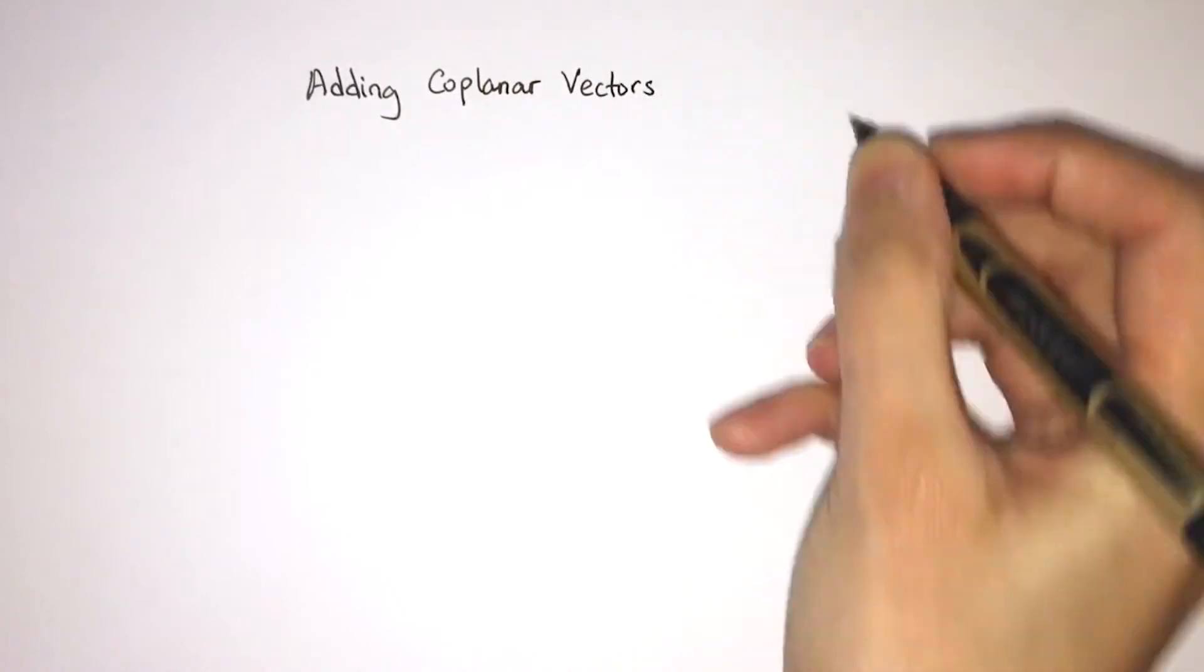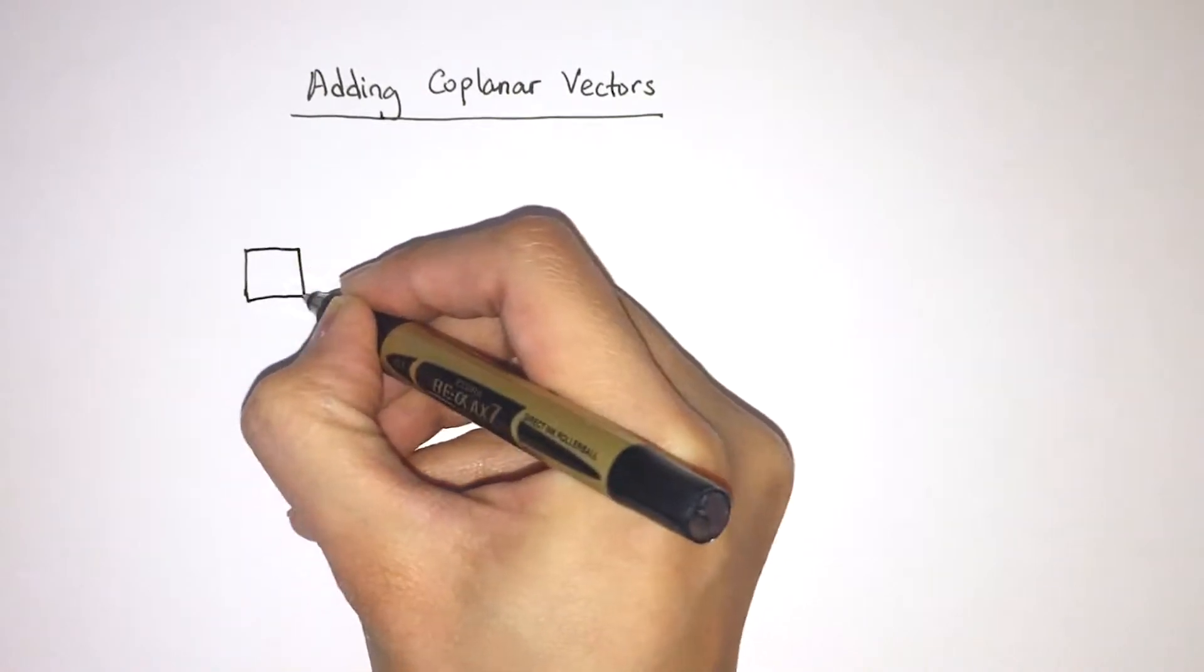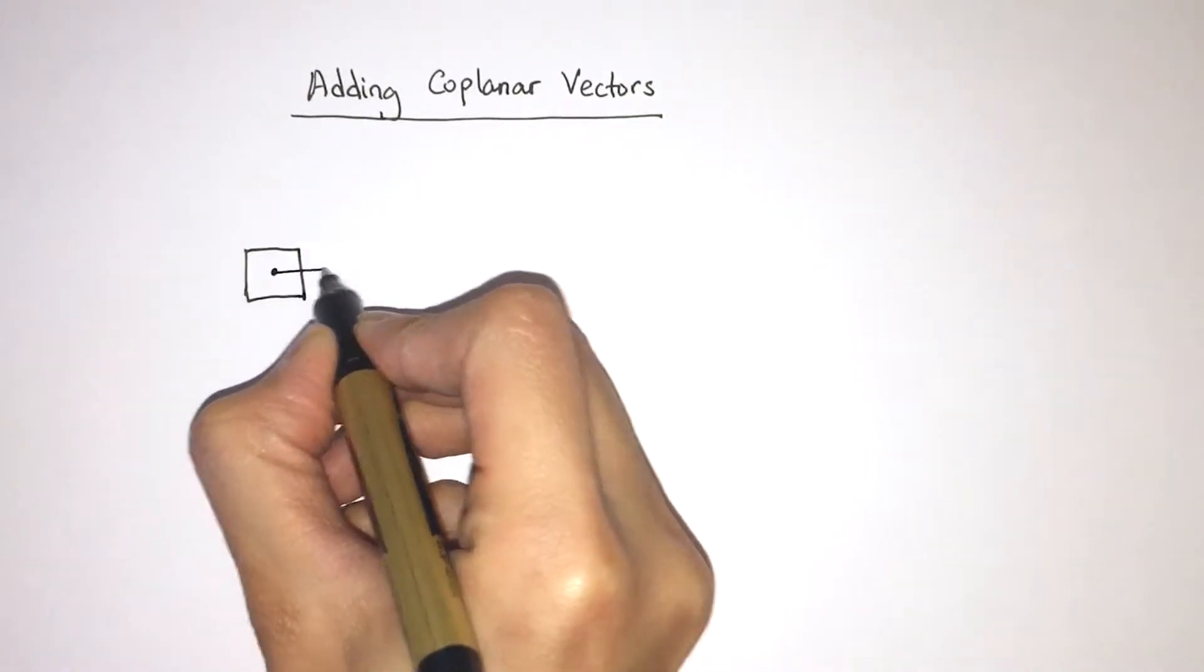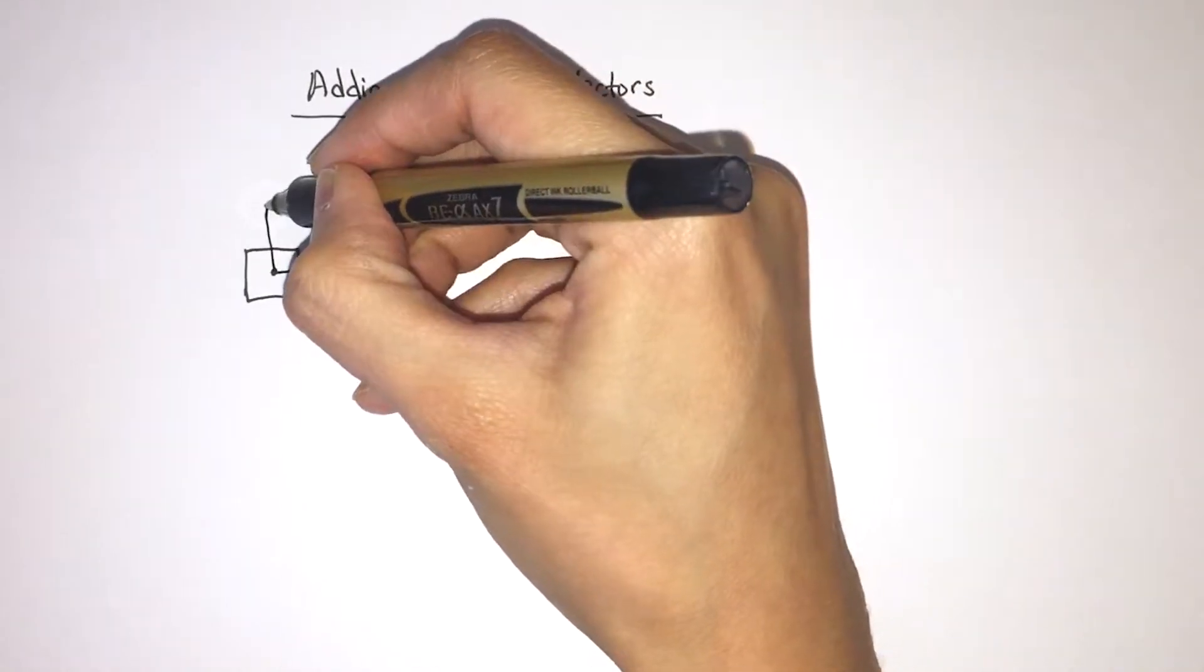I'm going to show you how you can add coplanar vectors together. Here we have an object and there are two forces acting on it. One is horizontal, 4 newtons, and the other one is vertical, and that's 3 newtons.